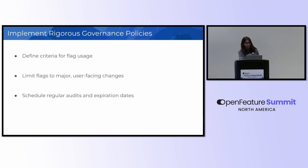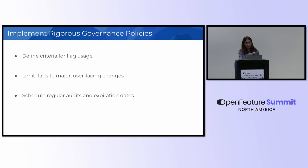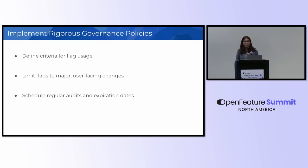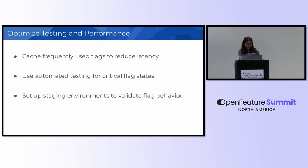Implement rigorous governance policies. Define criteria for flag usage — if you actually need the flag in your project, then and only then should you implement it; otherwise, if there's an option not to, you shouldn't. Limit flags to major user-facing changes. Schedule regular audits and set expiration dates — if your flags have expiration dates, it's easier for developer teams and they don't have to manually remove them. Also, cache frequently used flags to reduce latency, especially flags with frequent checking and slow evaluation times.